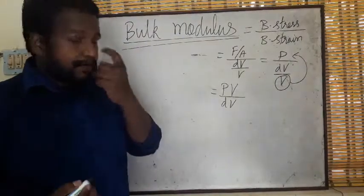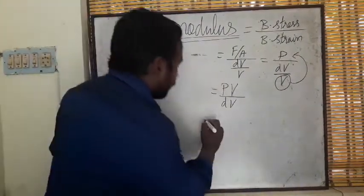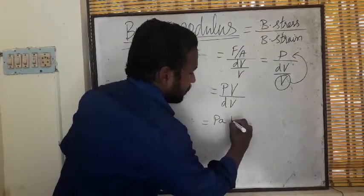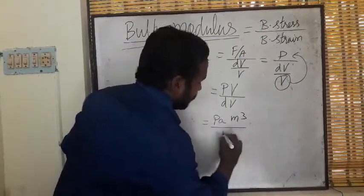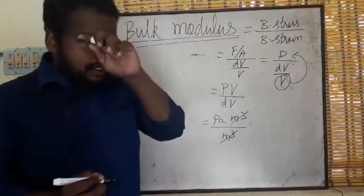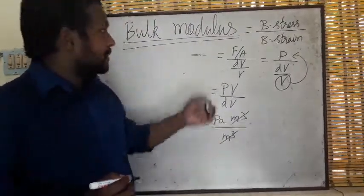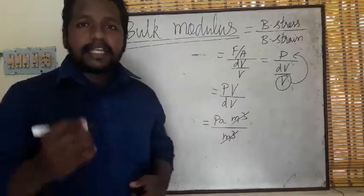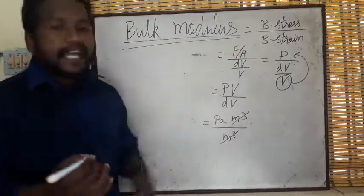As we know, pressure is equal to force per unit area, so we are going to take pressure as pascals and volume as meter cube. In this, volume meter cube and meter cube are going to be cancelled. So pressure unit is the same as the bulk modulus SI unit because strain has no SI unit.